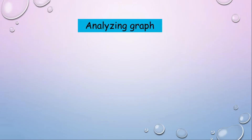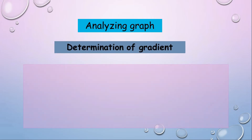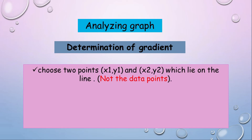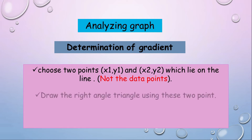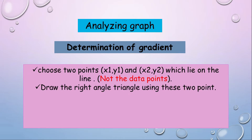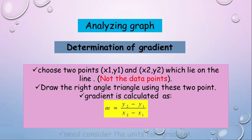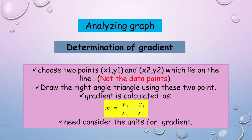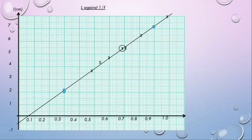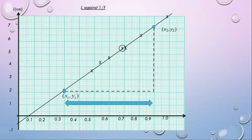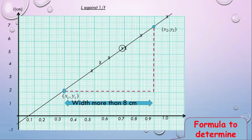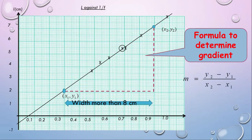Analyzing the graph: determination of gradient. Choose two points (x1, y1) and (x2, y2) which lie on the line, not the data points. Draw a right-angle triangle using these two points. The gradient is calculated using the formula: m = (y2 - y1) / (x2 - x1). Draw the triangle using dotted lines, choose two points which are not data points, and make sure the width of the triangle is more than 8 cm.